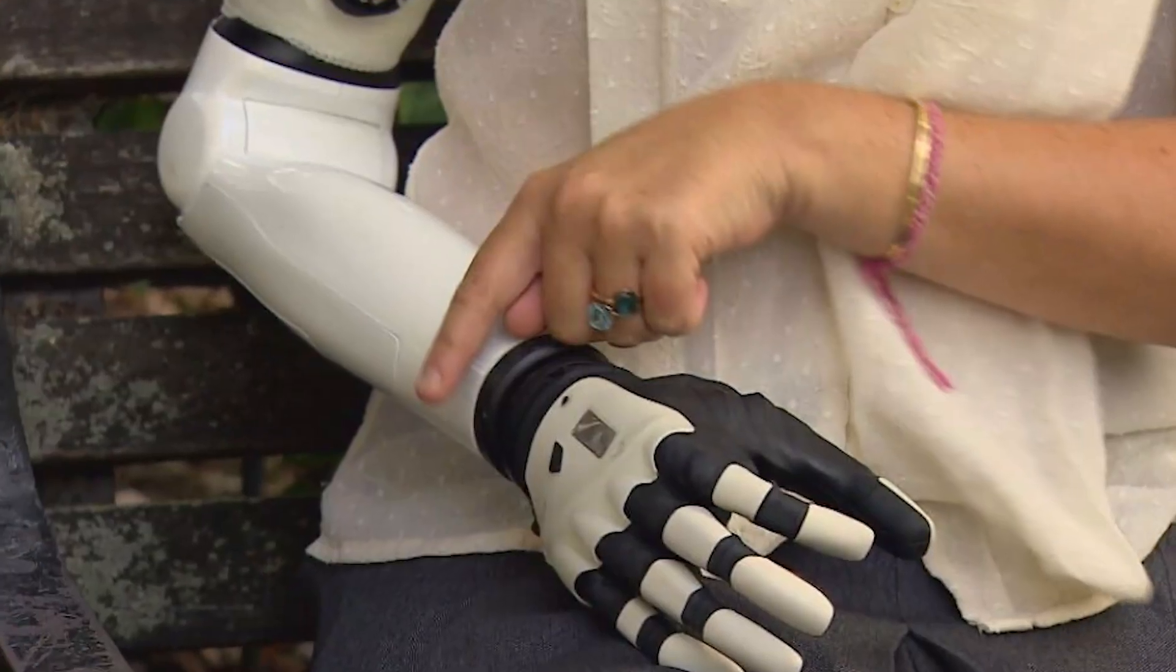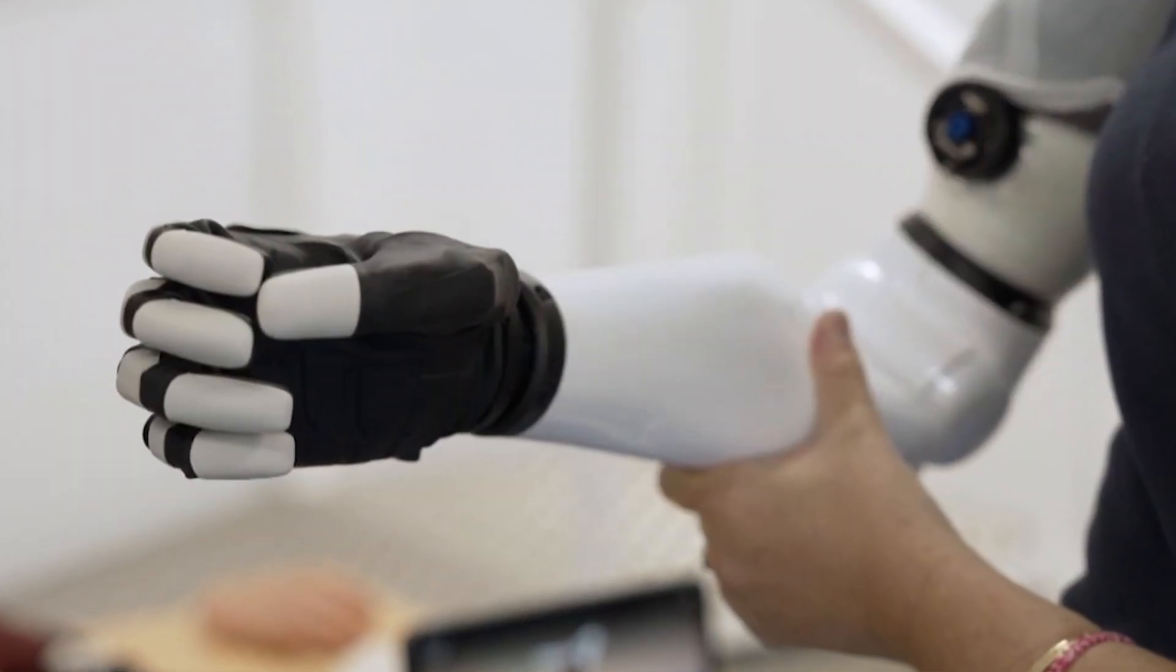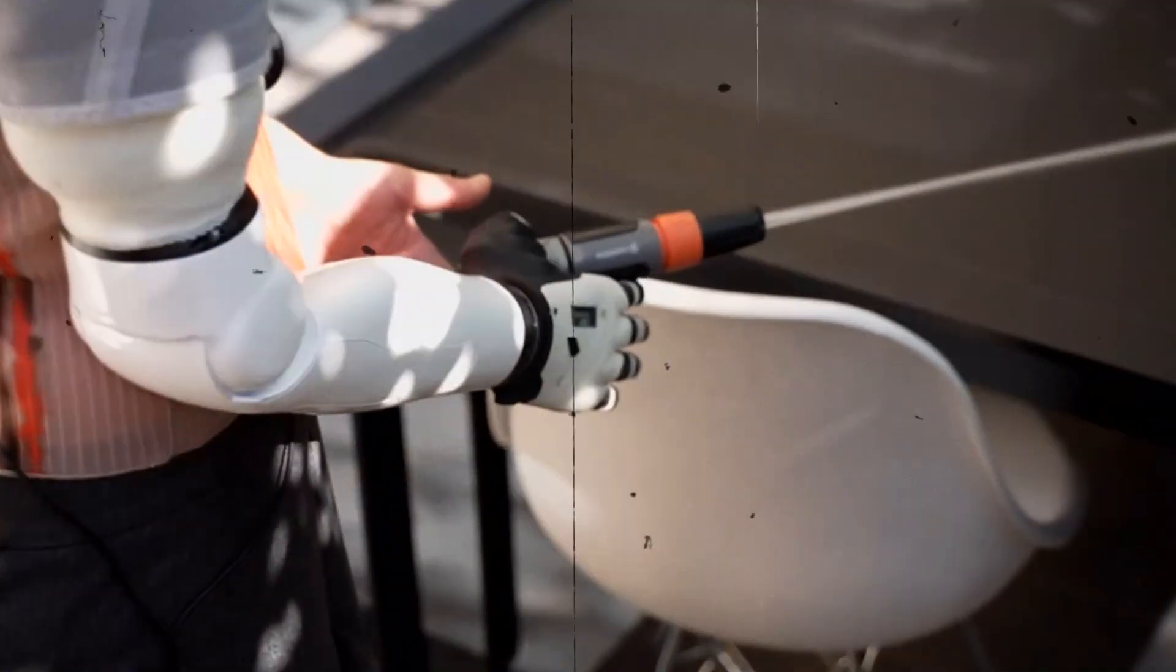This high-tech prosthetic is responsive to her residual limbs' movements and controlled by thoughts and artificial intelligence, allowing her to accomplish activities with precision that mimic natural human motion.